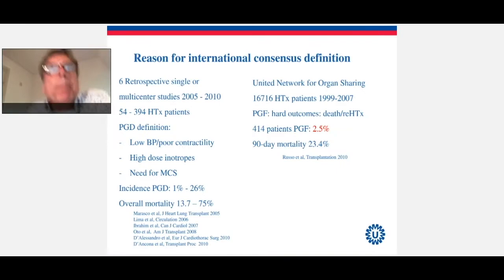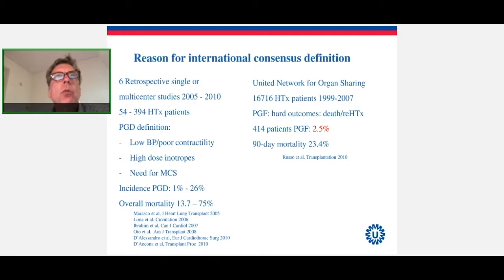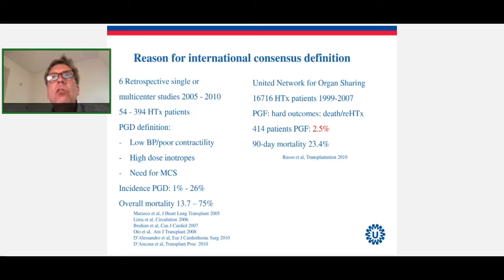The reason for an international consensus definition came from research started about 15 years ago. There were six retrospective single and multicenter studies published, dealing with 45 to fewer than 400 transplant patients. Primary graft dysfunction was defined as low blood pressure with poor contractility, high doses of inotropics, or need for mechanical circulatory support. The incidence ranged from 1 to 26%, with an overall mortality of 13 to 75%.